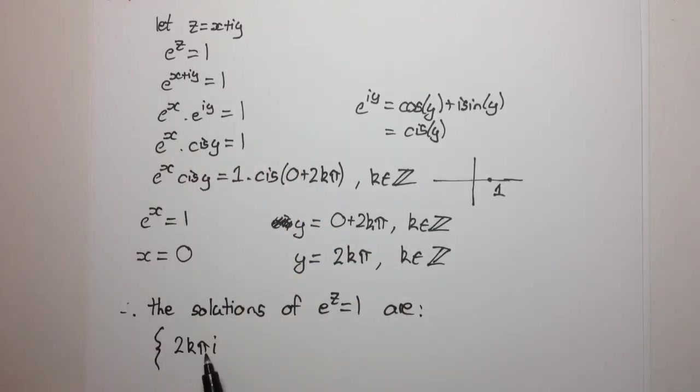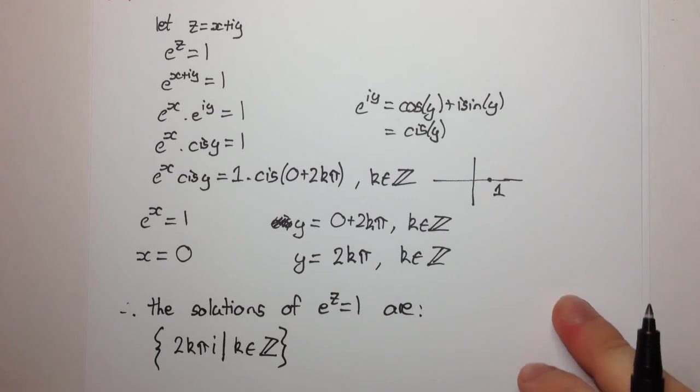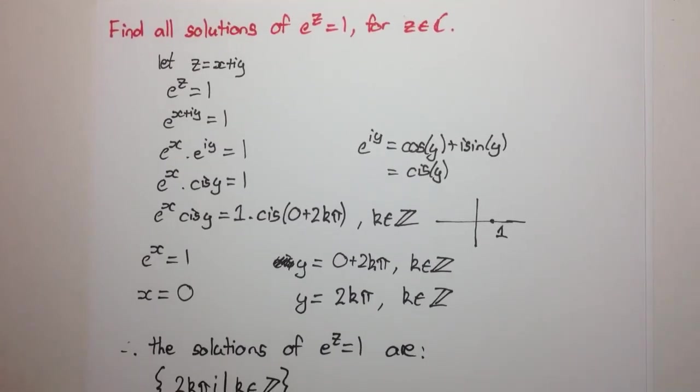So it's 2kπi, where - so, this line here means such that - such that k is an integer. And that's the final answer. Thanks for watching.